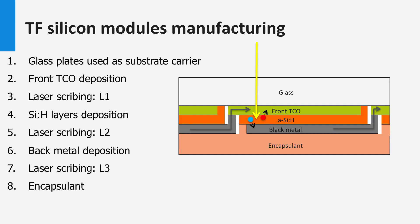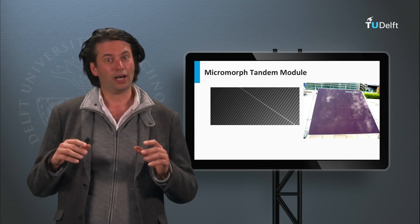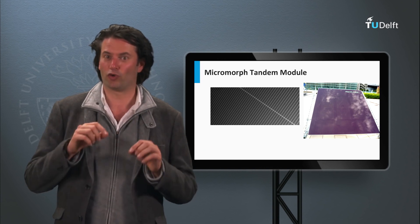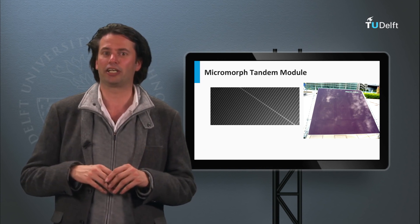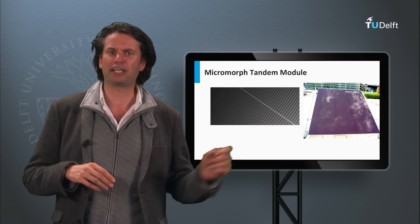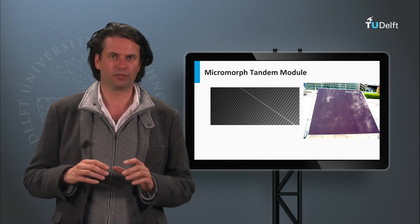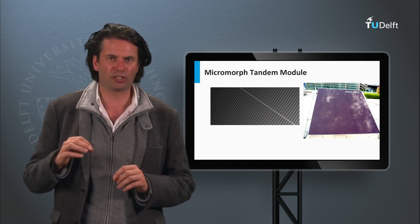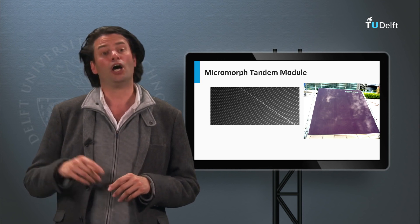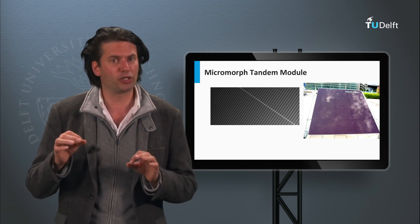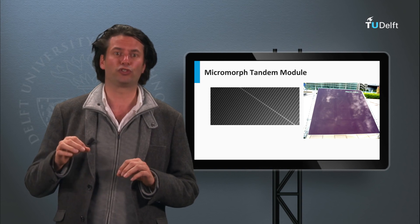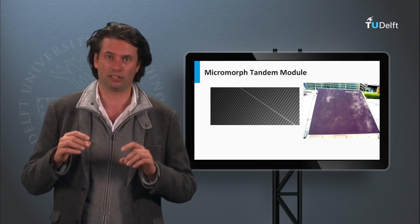In this interconnection scheme, the metal back contact is connected with the front zinc oxide contact of the next cell. A module consists out of long strips of solar cells which are interconnected. Here you see a picture of a micromorph tandem module. You can see the various solar cells and the laser scribes. The open circuit voltage of the module is determined by the number of solar cell strips that are connected in series.